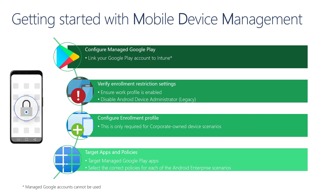It is important to target policies that apply to each of the enrollment scenarios that you plan to support — for example, fully managed user devices versus dedicated devices. This will ensure that devices are able to successfully receive these settings. You must also ensure that you deploy managed Google Play apps to devices enrolled using Android enterprise rather than Android store apps, which are only supported for devices enrolled with the legacy device administrator enrollment method.